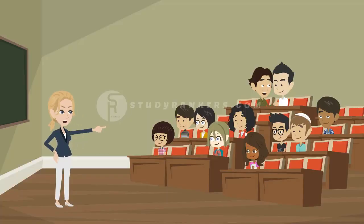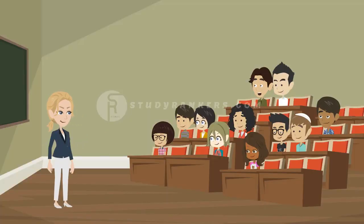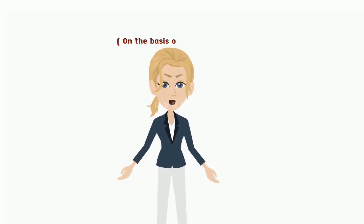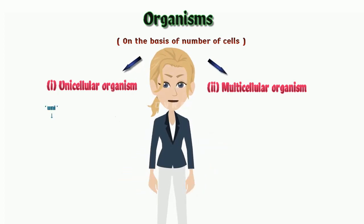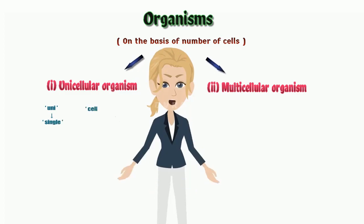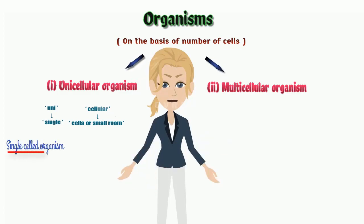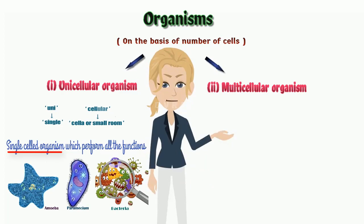Is there any problem with both of you? Ma'am, we learn about cell. Is there any basis of classifying organisms? Good question, Rohit. On the basis of numbers of cells, organisms are of two types. They are unicellular organism and multicellular organisms. Unicellular is made up of two words. That is, uni means single and cellular means cell or small room. It means, unicellular organisms are single-celled organisms which perform all the functions. For example, amoeba, paramecium, bacteria.